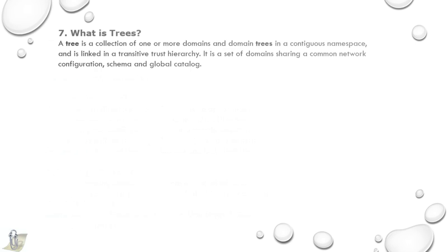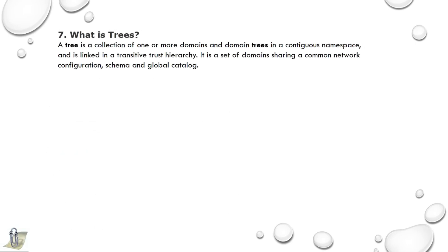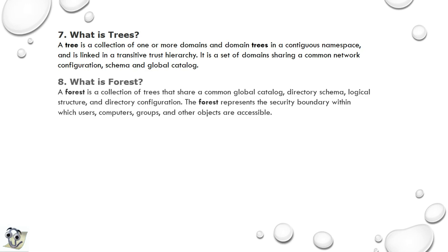Seventh question: What is a tree? A tree is a collection of one or more domains and domain trees in a contiguous namespace, linked in a transitive trust hierarchy. It is a set of domains sharing a common network configuration, schema, and global catalog.